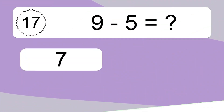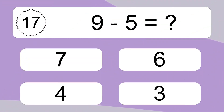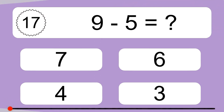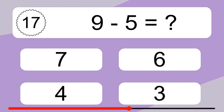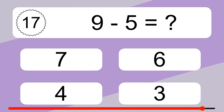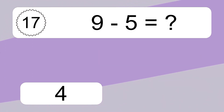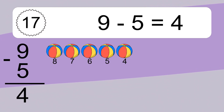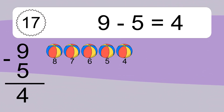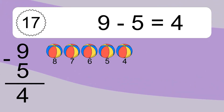9 minus 5 equals what? 9 minus 5 equals 4. Let's count it: 8, 7, 6, 5, 4.